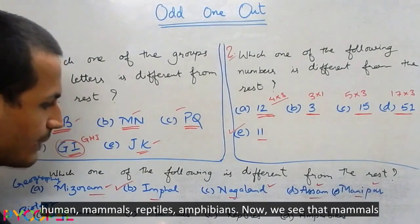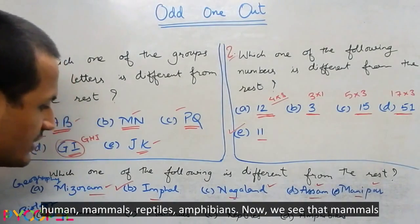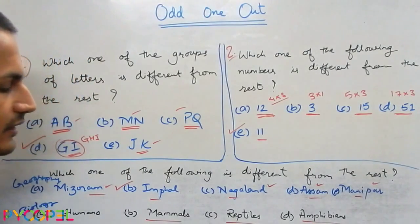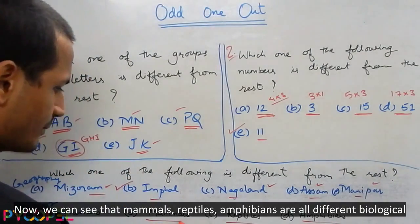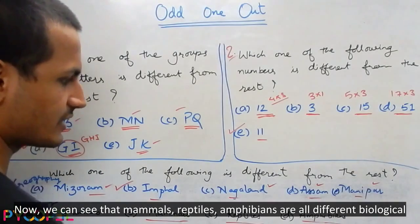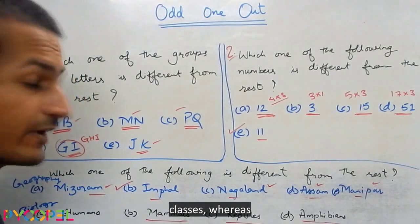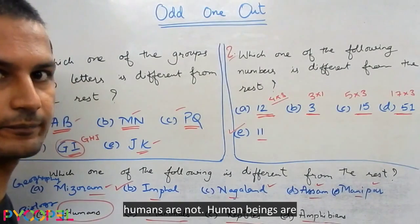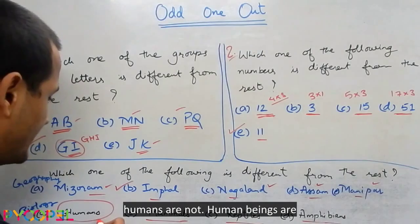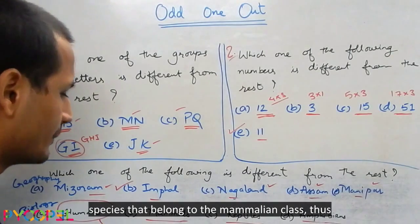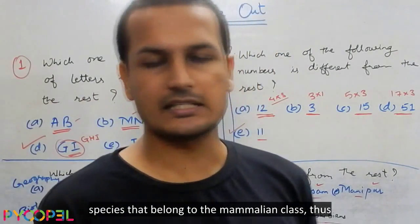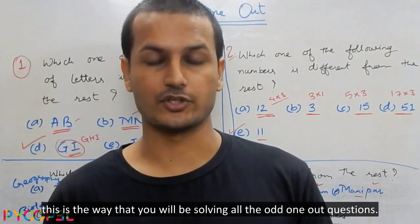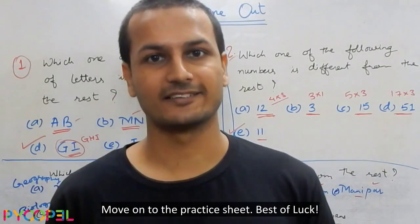Similarly: humans, mammals, reptiles, amphibians. We can see that mammals, reptiles, and amphibians are all different biological classes, whereas humans are not — human beings are a species that belong to the mammalian class. Thus, this is the way you will be solving all odd one out questions. Move on to the practice sheet. Best of luck.